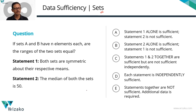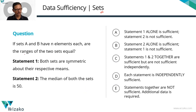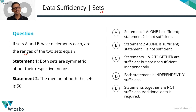If sets A and B have n elements each, are the ranges of the two sets equal? To the extent that we are talking about ranges, symmetric, mean, median — this is absolutely a statistics question. If you are talking about sets A and B, that's probably the only word in this which is a sets question.